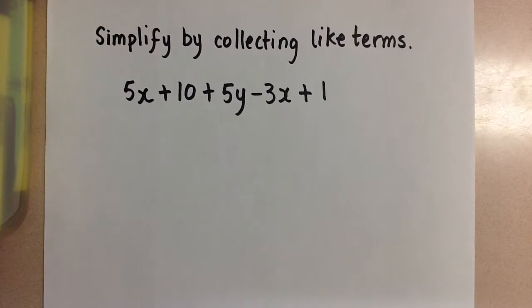We are going to simplify this polynomial expression by collecting like terms. Like terms contain the same variable or constant numbers can go together as like terms as well.